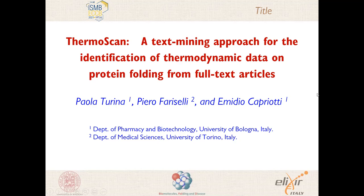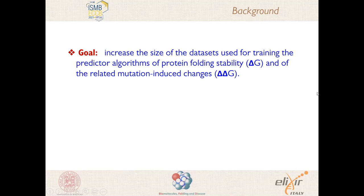Our main goal was to increase the size of the datasets used for training the predictor algorithms of protein folding stability and of the related mutation-induced changes. These two parameters are indicated by delta G and delta delta G respectively.